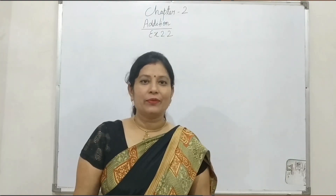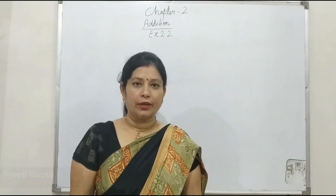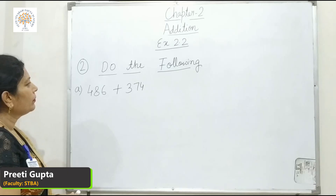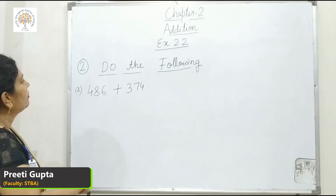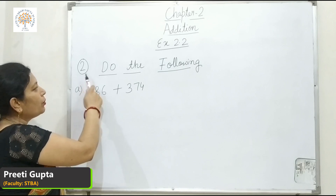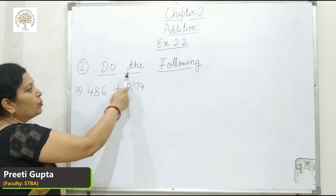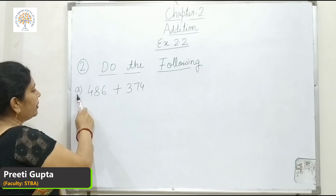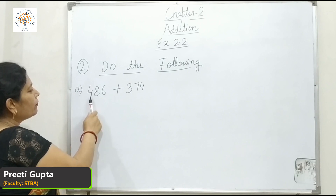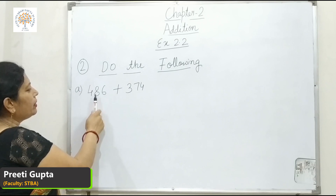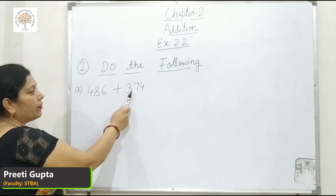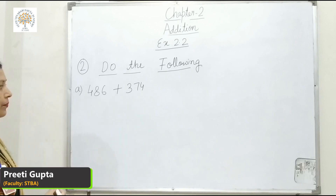Hello everyone. Today we will continue chapter 2, Access to Open. We will continue question number 2 — do the following. Part A: 486 plus 374.